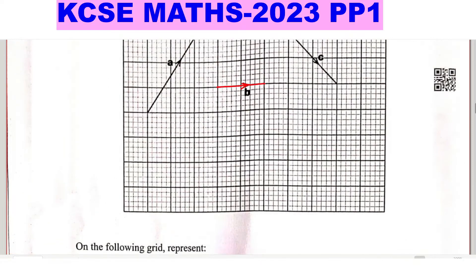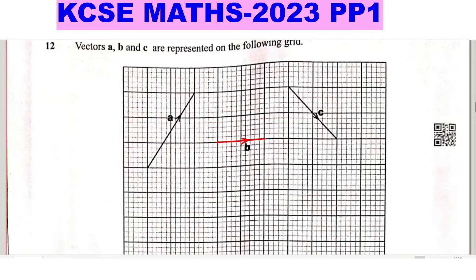Let's begin with A plus B. In vectors, direction is very important. To write vector A in column vector form, showing the displacement in both the X and Y axes: the horizontal displacement is 2 squares to the right, which is positive, so that is 2. Then on the Y axis upwards, there are 3 squares. So vector A is written as column vector 2, 3.